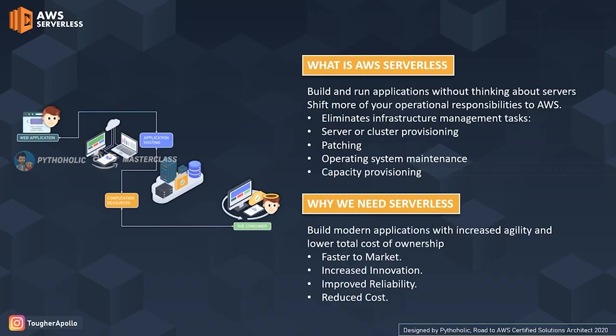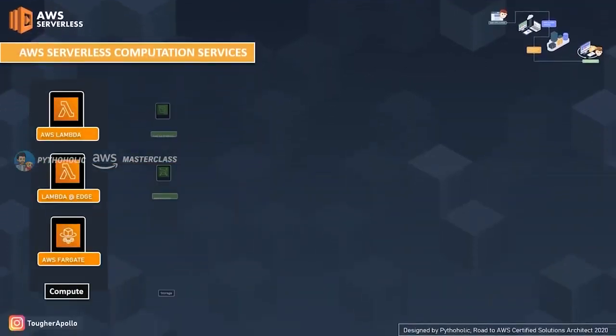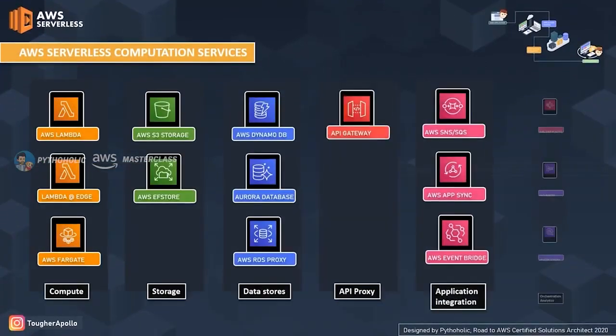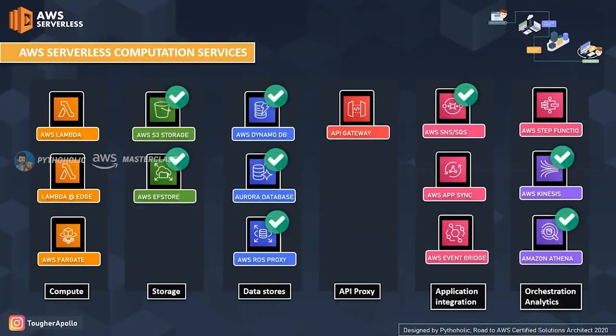The following can be termed as the pillars of modern applications. First is faster to market — your product reaches customers on time because you can spend more time designing productive applications rather than dealing with server maintenance overhead. Second is increased innovation — you get more time to innovate. Third is improved reliability. Fourth is reduced cost. All of these make up a serverless architecture.